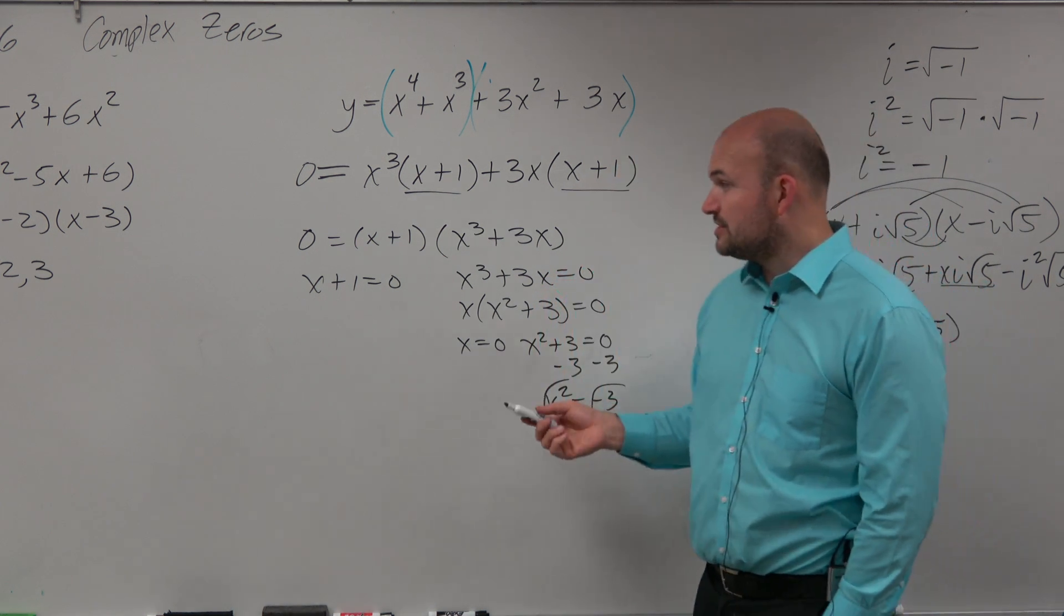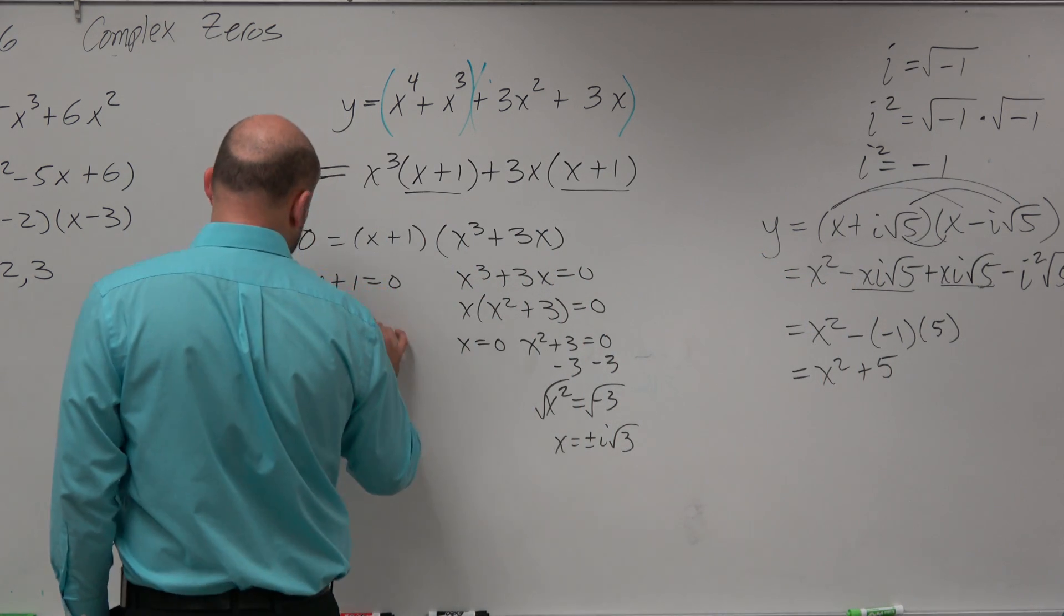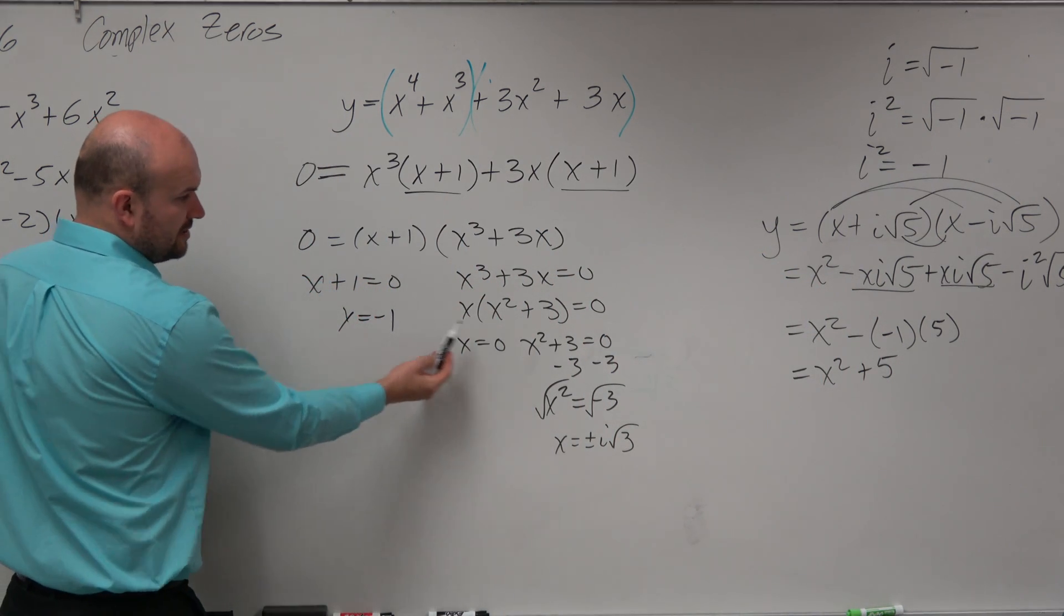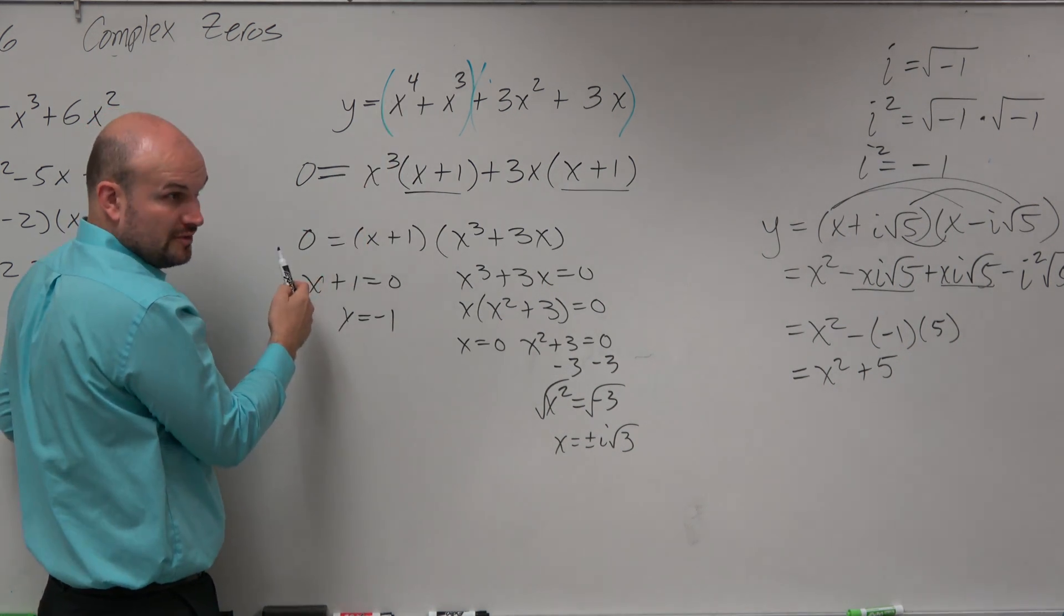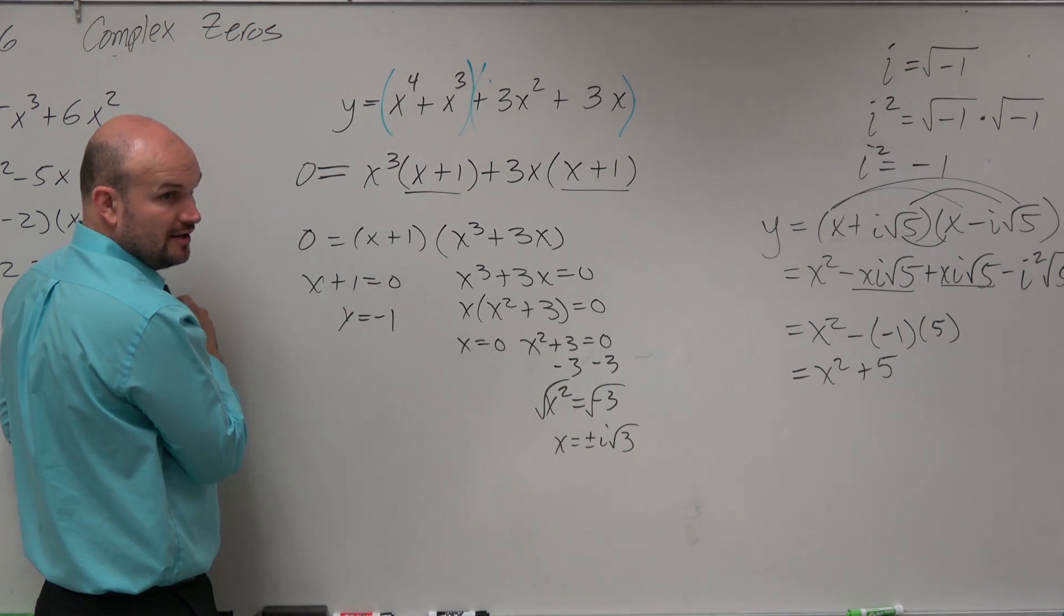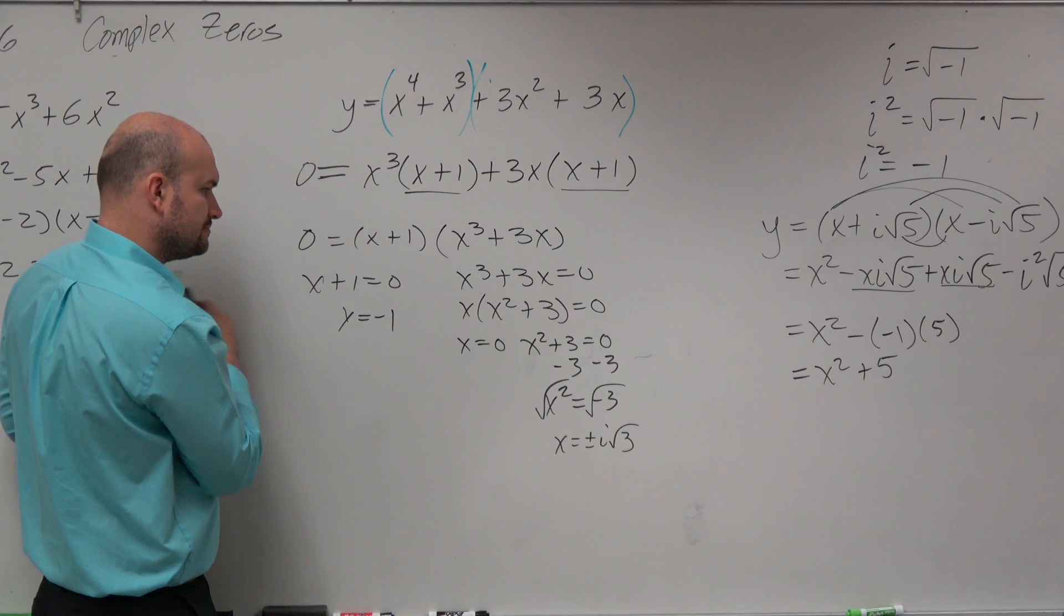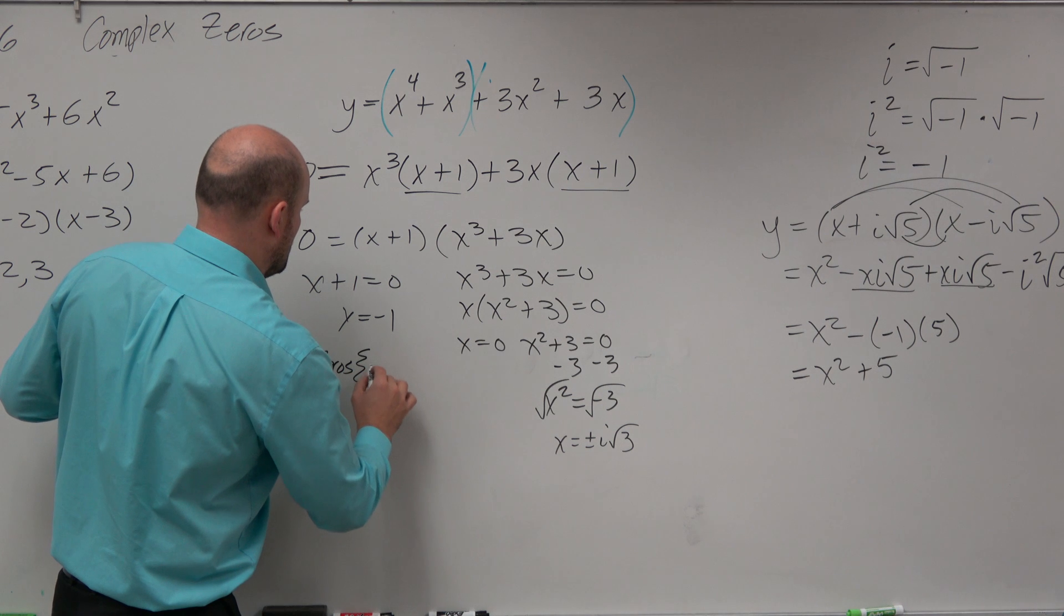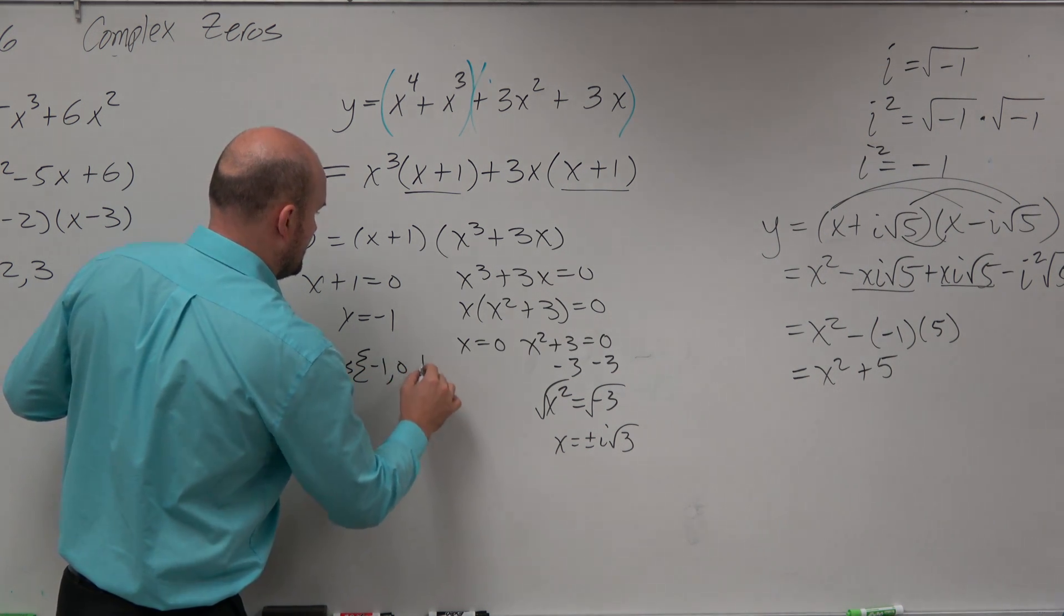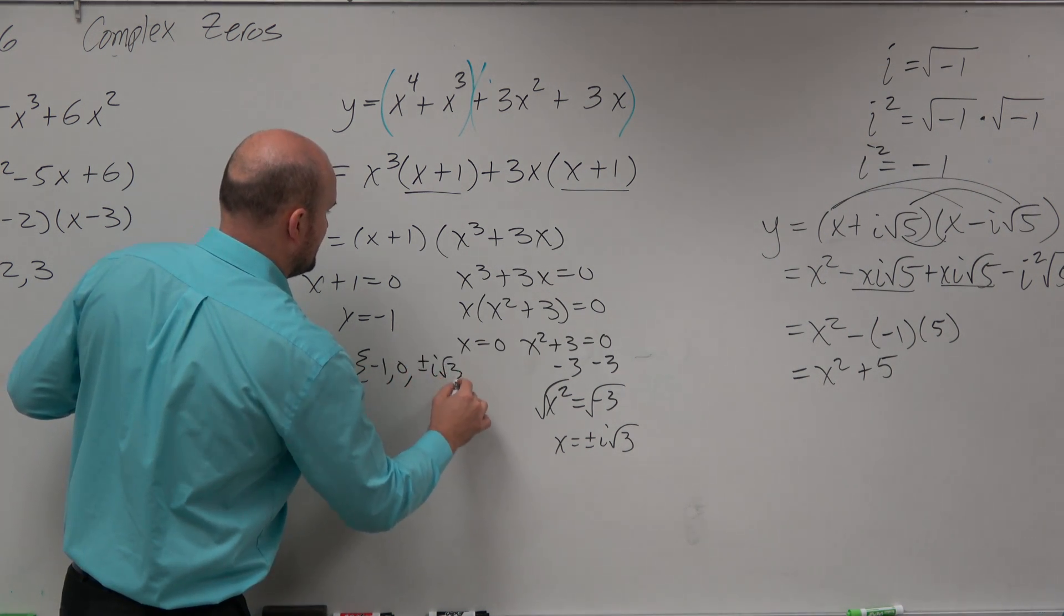So then let's count up our zeros here real quick, x equals negative 1. So I have 1, 2, 3, 4, which matches power 4. OK, it's good. No repeated zeros. So that's looking good. So my zeros are negative 1, 0, and plus or minus i square root of 3.